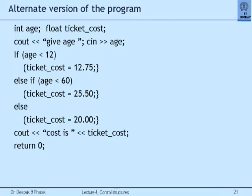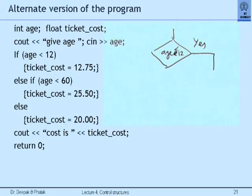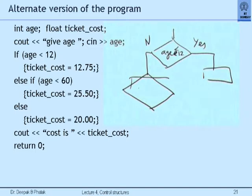Here is an alternate version of the program. There are complicated three cases but here also I am using the if-else ladder but in a different way. How is the ladder being used now? I am first starting with the lowest condition. I first examine if H is less than 12, and if yes, I do something. If it is no, I will check another condition. So I am constructing a ladder but with reversal of the conditions.